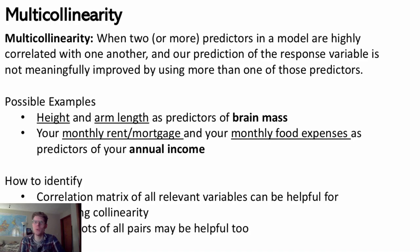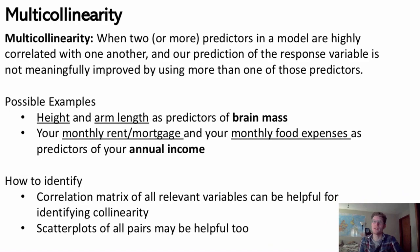How do we identify when we have highly correlated predictors — multicollinearity in the model? One way is to create a correlation matrix of all relevant variables to see if any have correlations close to negative one or positive one, since those represent perfect negative and positive correlation. Any predictors close to those values may mean we don't need both in the model.